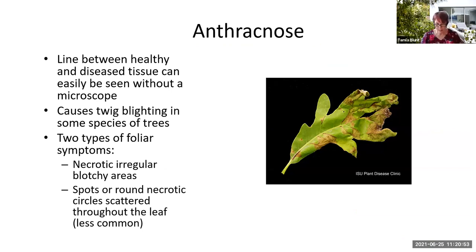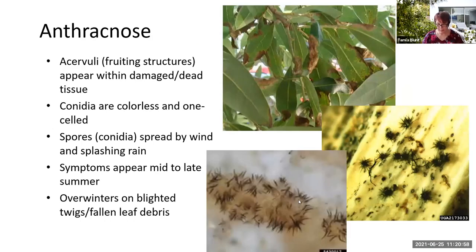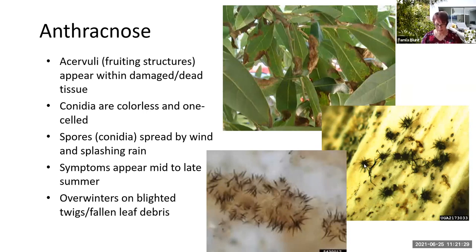However, if we don't do proper sanitation at the end of the growing season, we can see reappearance the following year because the fruiting structures of anthracnose will produce spores that get blown onto leaves. You can see the necrotic lesions here — the dying parts of the tissue — with no specific pattern; they're very irregular and blotchy. This one is on an oak. These are the fruiting structures called acervuli, and they produce these structures called CD. Scientists haven't really figured out their purpose yet, but the spores get splashed around to other leaves.